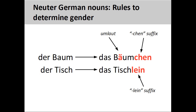'Baum,' meaning tree, becomes 'Bäumchen,' meaning little tree, and 'Tisch,' meaning table, becomes 'Tischlein,' meaning little table. There are also numerous dialect variations of the diminutive suffix.